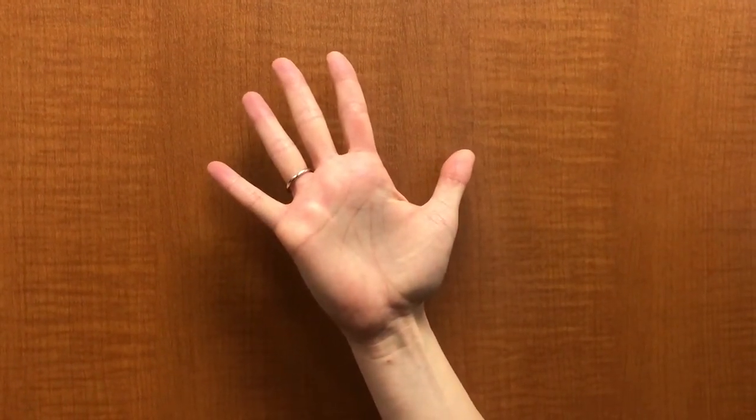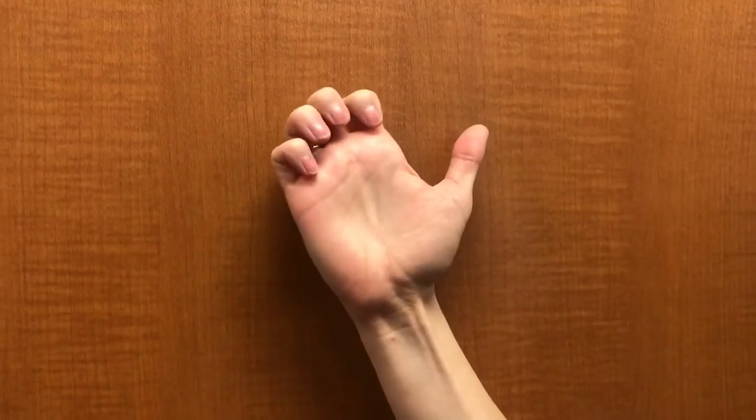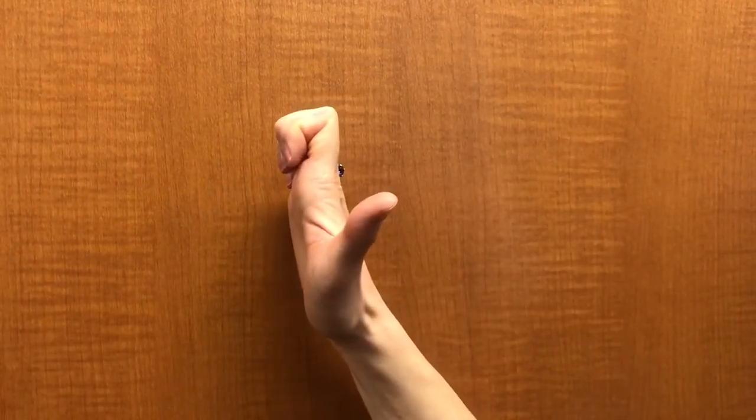Next you're going to work on a claw or hook position by bending the IP joints, pulling them in and back.